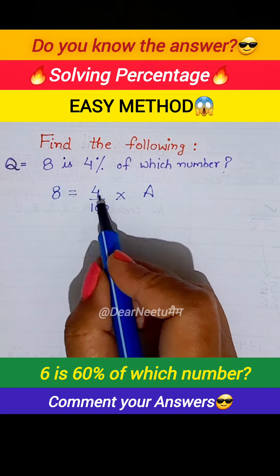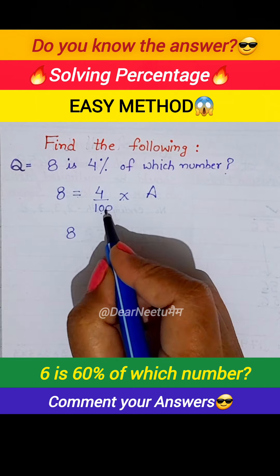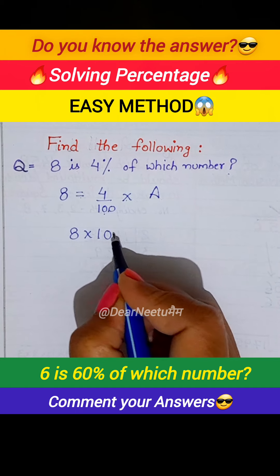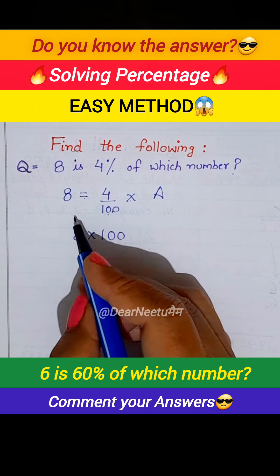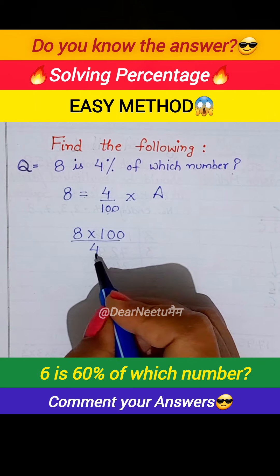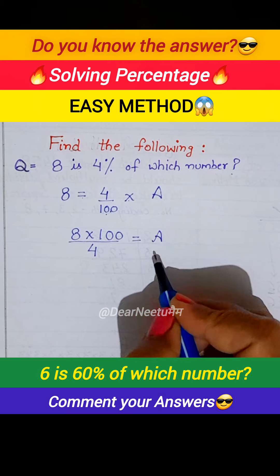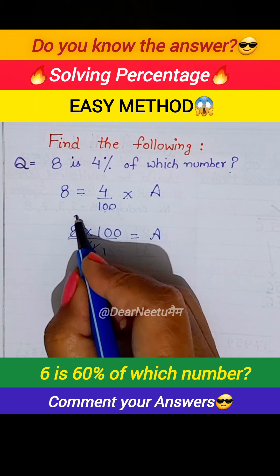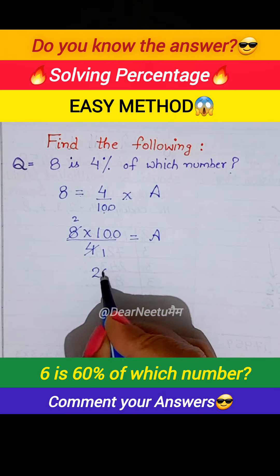Saari numbers ko hum is tarah shift karenge. Dekho, 8 — yahan pe 100 divide ho raha hai, is tarah se ye 8 ke saath multiply hoga. 4 is upon, yahan neeche divisor kaam karega. Equals to a, hume find karna hai. Cutting karenge — 4 ones are 4, and 4 twos are 8. And 2 ko 100 se multiply karenge — answer is 200.